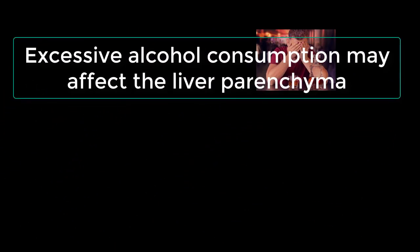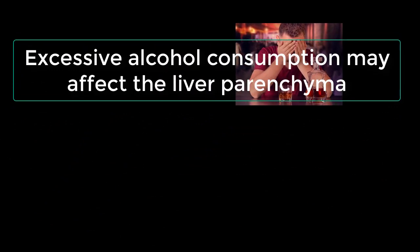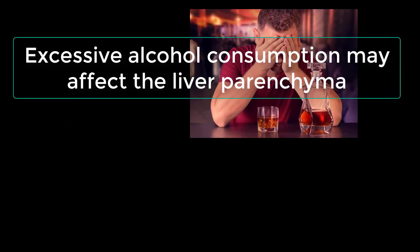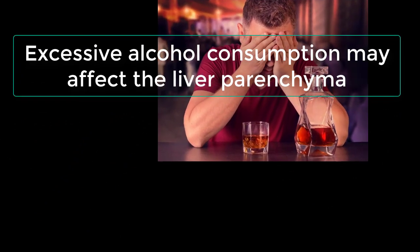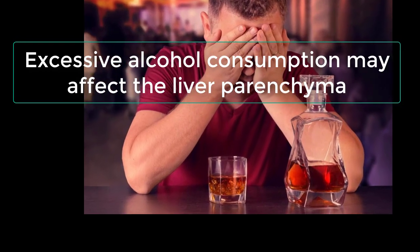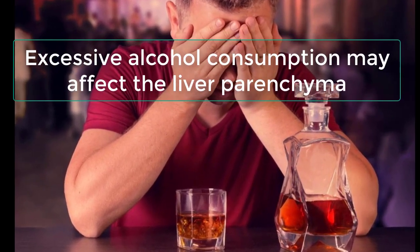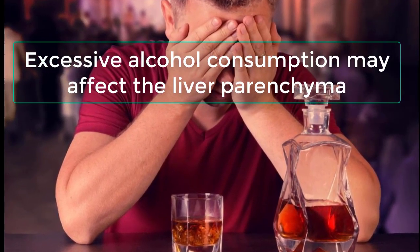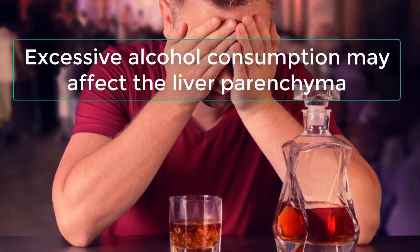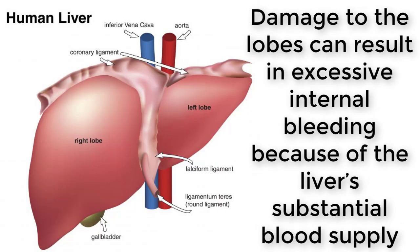Much of this organ's blood supply is venous, consisting of blood that needs to be filtered before it can be oxygenated and returned to circulation. A number of individual lobes make up the liver, and these should not be confused with the much smaller lobules which perform the day-to-day functions of this organ.